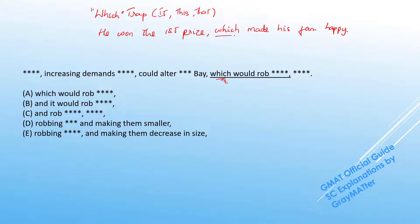We are using a pronoun which, and if which is a pronoun, what is a pronoun supposed to refer to? It can only refer to a noun. So the pronoun is actually referring to the first prize. That's the noun right in front of it. But is that what the sentence intends? Are we trying to say that the first prize made his family happy or his winning the first prize made his family happy? I think you will all agree that the latter is the case.